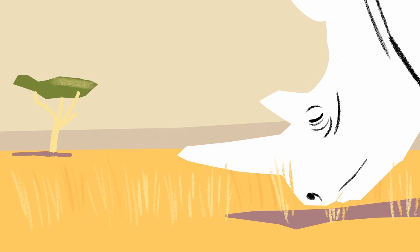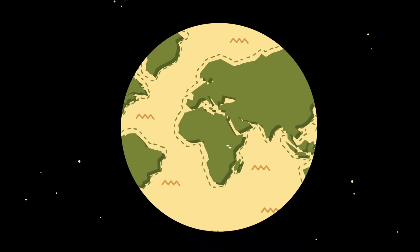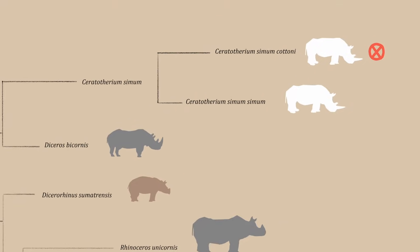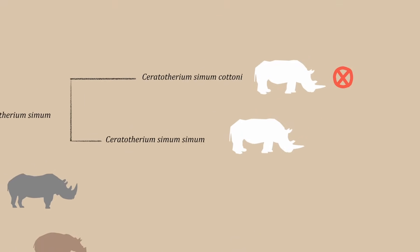At the time of this video's publication, these are the last two known northern white rhinos left on Earth. Their species is functionally extinct. Without a male, Najin and Fatu can't reproduce.